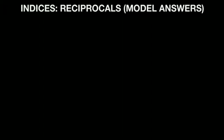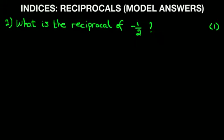Now let's move on to our next question, number 2. What is the reciprocal of minus a half? Again, the first thing to notice, as always, is the number of marks — this is typically a one-mark question. We're going to use the same formula. I like to write the formulas each time as it's good practice. So the reciprocal means to the power of minus 1 equals 1 over x.